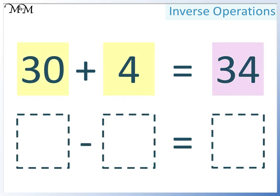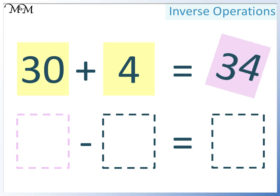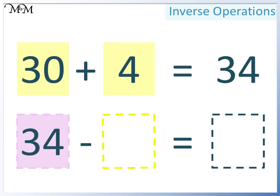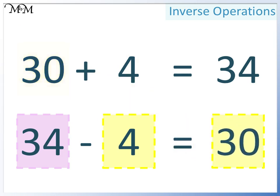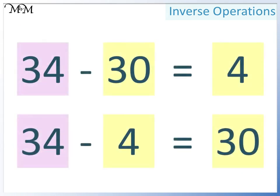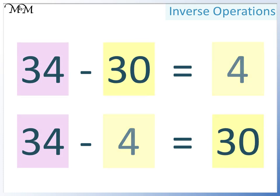Let's look at another way that we could write this. Because we are subtracting, we must put the largest number at the beginning of our calculation. The largest number is 34. In the next space, we can have either of the two smaller numbers. This time, we'll move 4 here, and in the final space, we'll write 30. 34 take away 4 equals 30. So we have 34 take away 30 equals 4, and 34 take away 4 equals 30. The largest number must be at the start, and the order of the two numbers can be swapped.